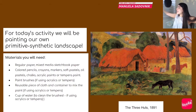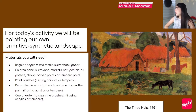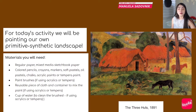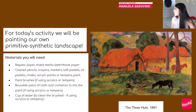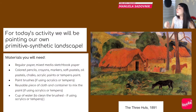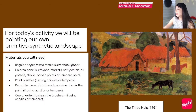For today's activity, we will be painting our own primitive synthetic landscapes. The materials you will need are regular paper or mixed media sketchbook paper, colored pencils, crayons, markers, soft pastels, chalks, acrylic paints, or tempera — whatever you want to use. You'll also need a reusable piece of cloth, a container to mix paint, and a cup of water to clean your brushes. Here is another reference: 'Three Huts' from 1891, from his first exploration of Tahiti.